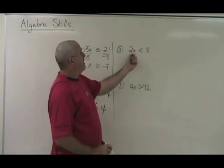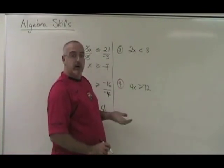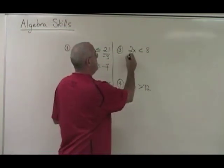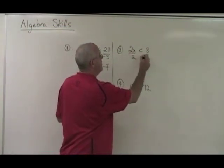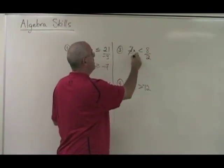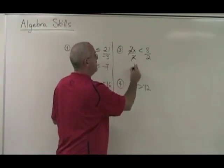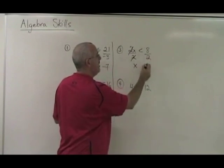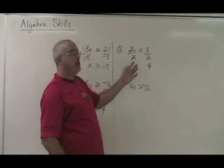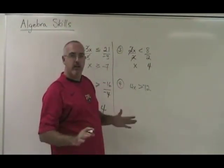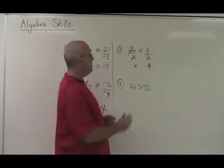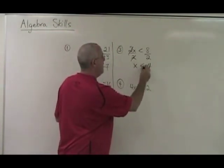Here, my x is being multiplied by a 2. I have to divide both sides of the equation by 2. The 2's cancel. My x is isolated. 8 divided by 2 is 4. But because 2 is not a negative number, I do not turn the sign backwards. I keep it the way it is.